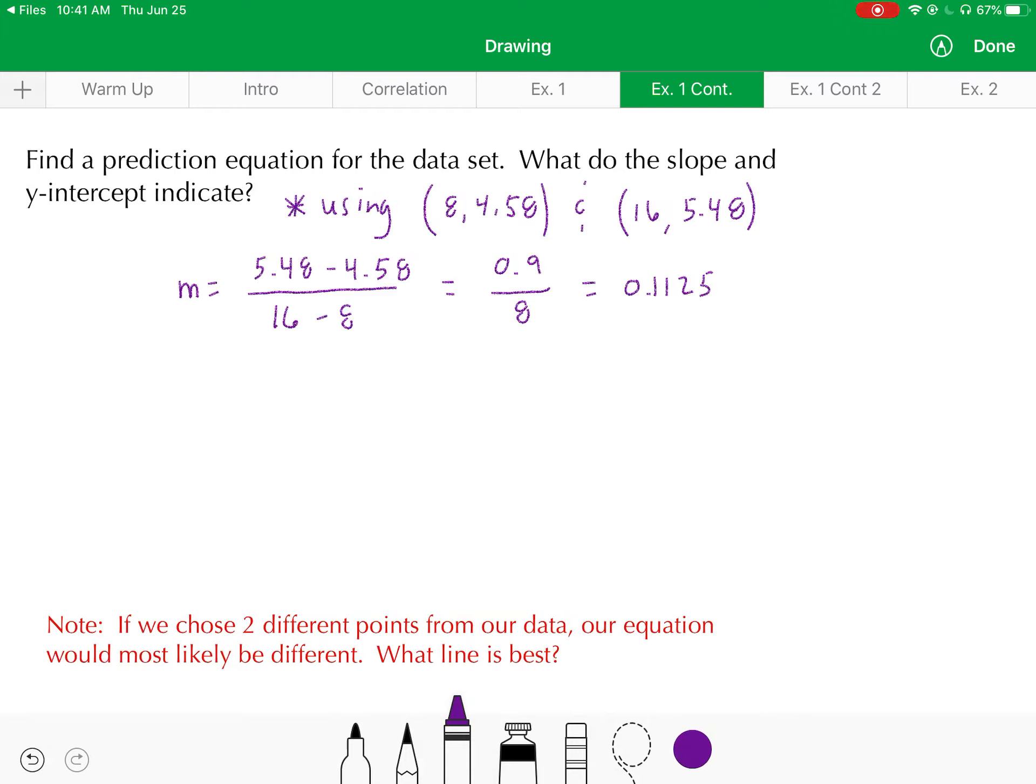Then I'm going to take that slope, and I'm going to take one of my two points, put them into point-slope form to make my equation. So I'm going to use the first point, 8, 4.58 to do that. y minus 4.58 is equal to my slope of 0.1125 multiplied by the quantity of x minus 8. And then we're going to put this into slope-intercept form. So I'll distribute my slope, give me 0.1125x minus 0.9. I'll add my 4.58 over. And there is our equation to represent the data set in slope-intercept form: y = 0.1125x + 3.68.